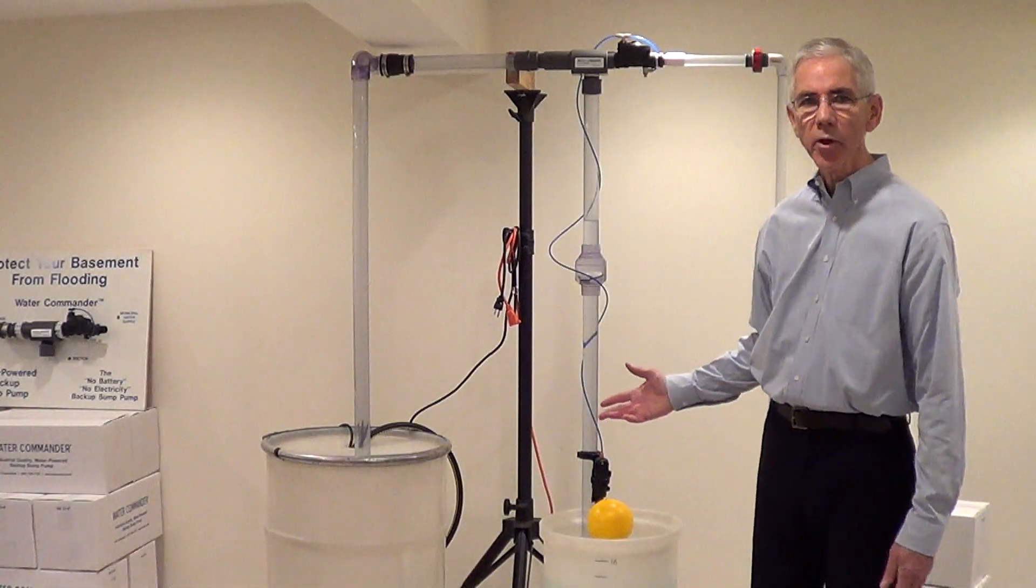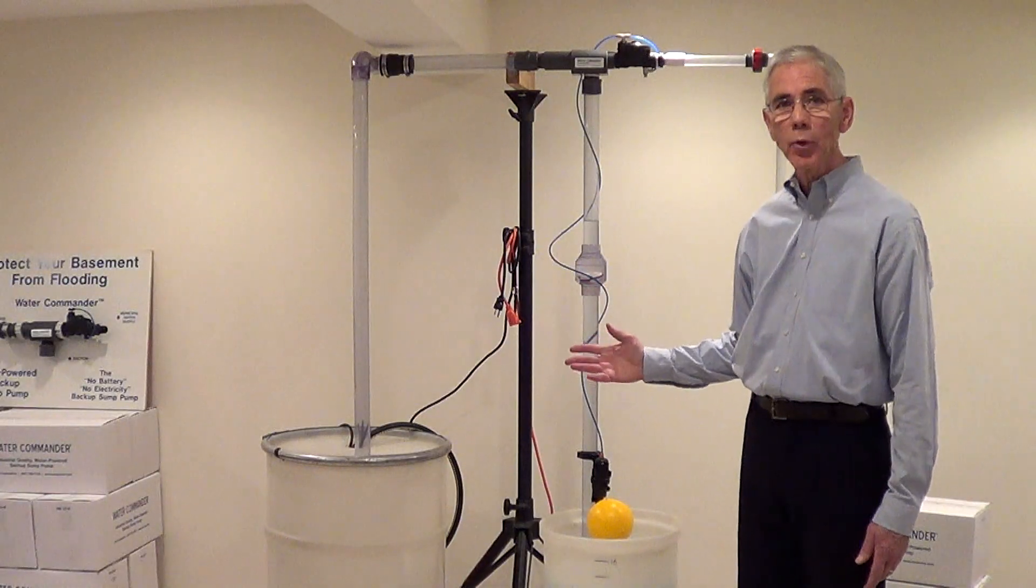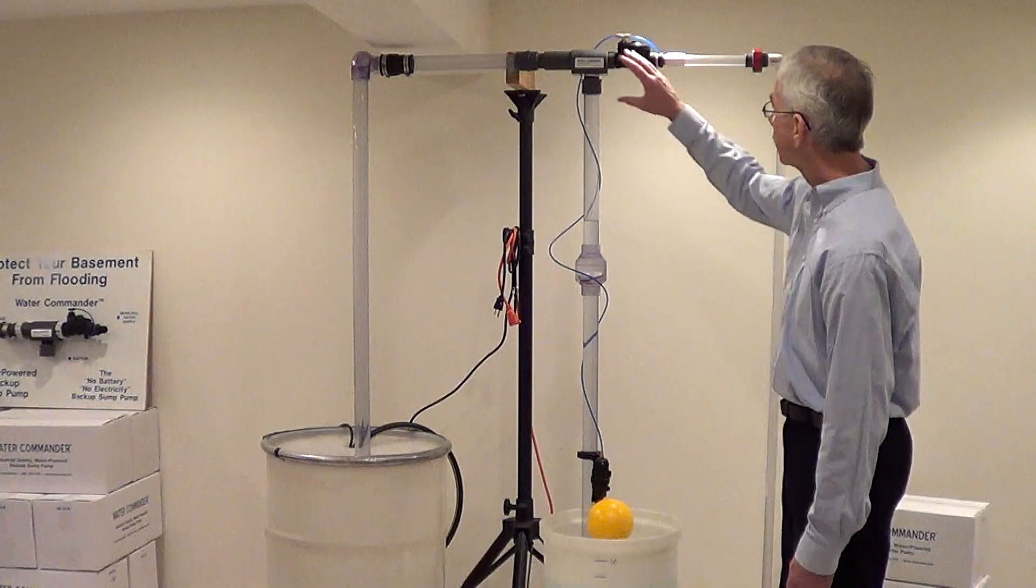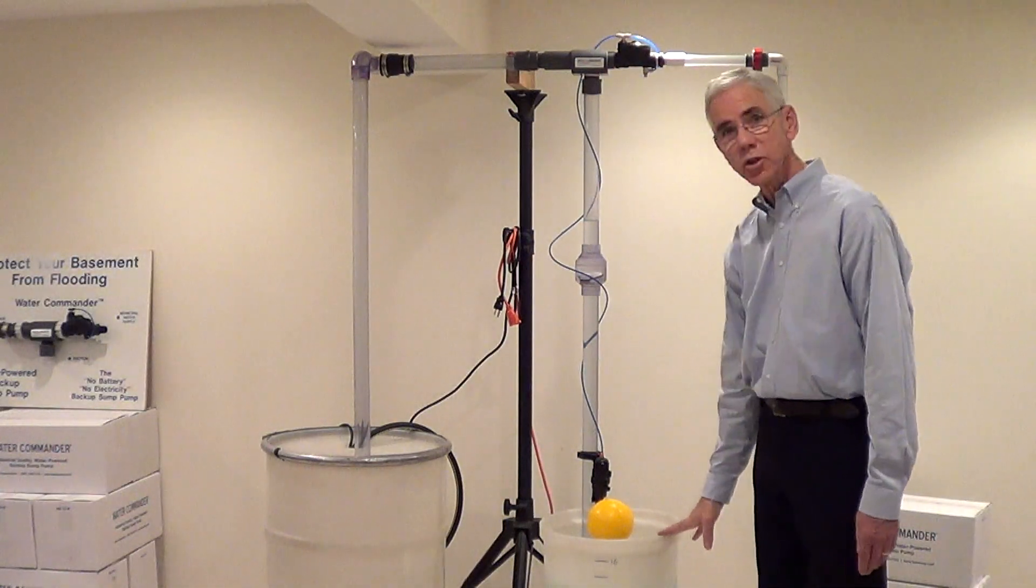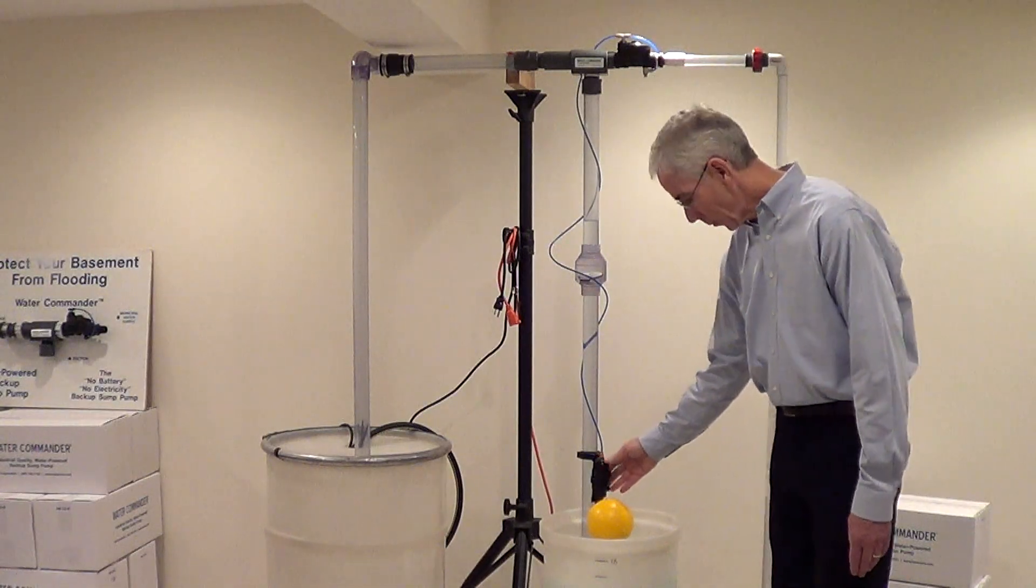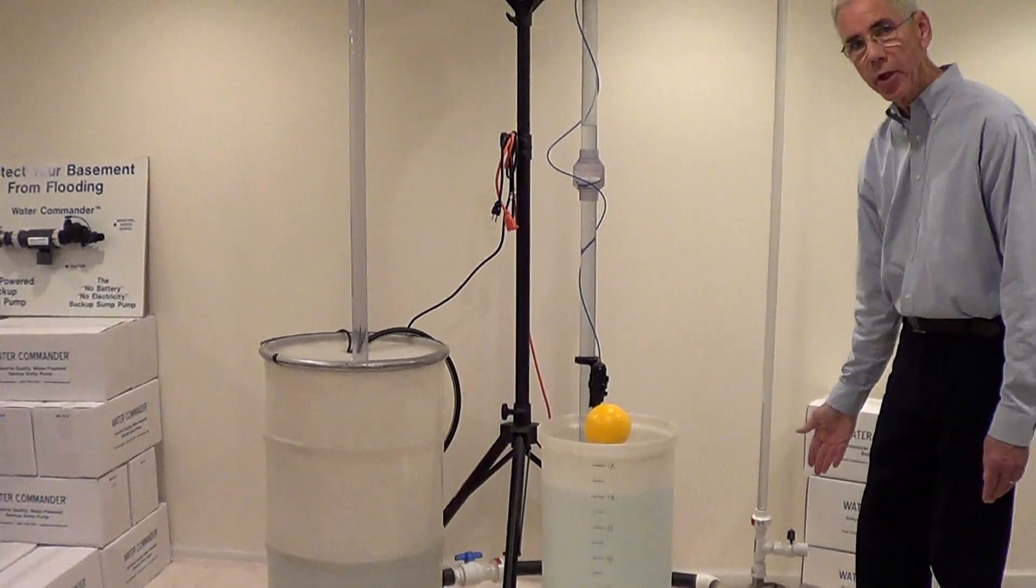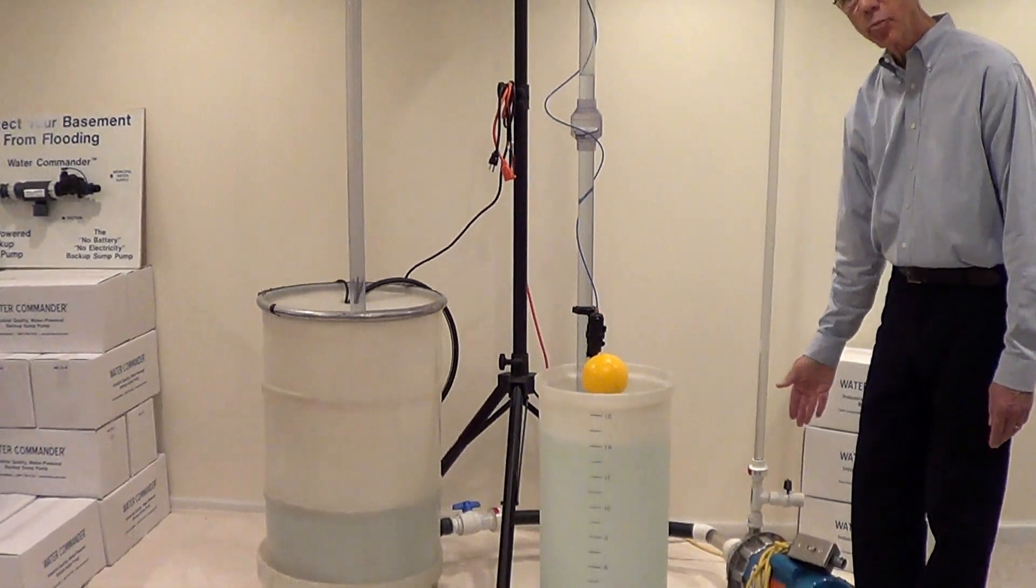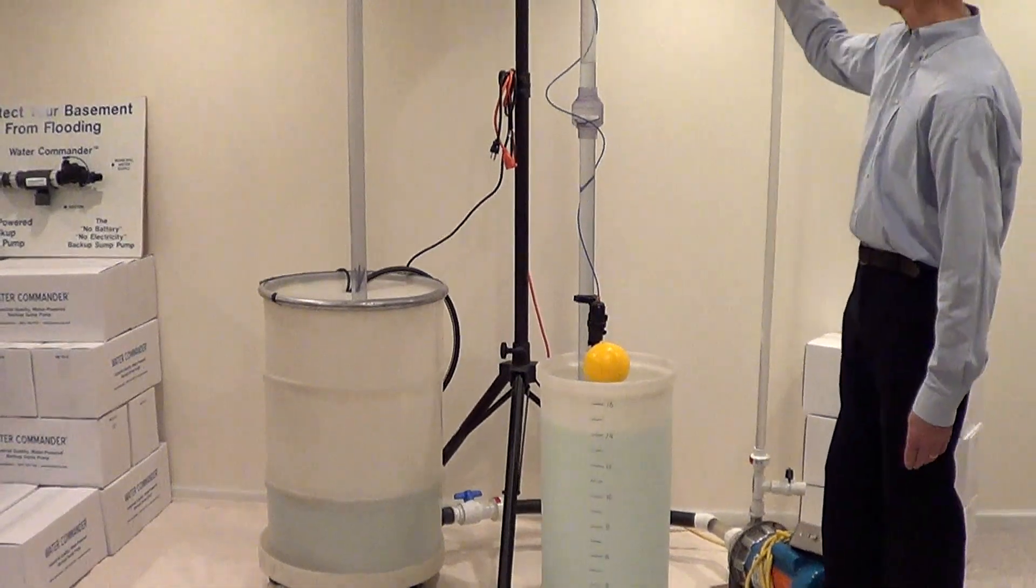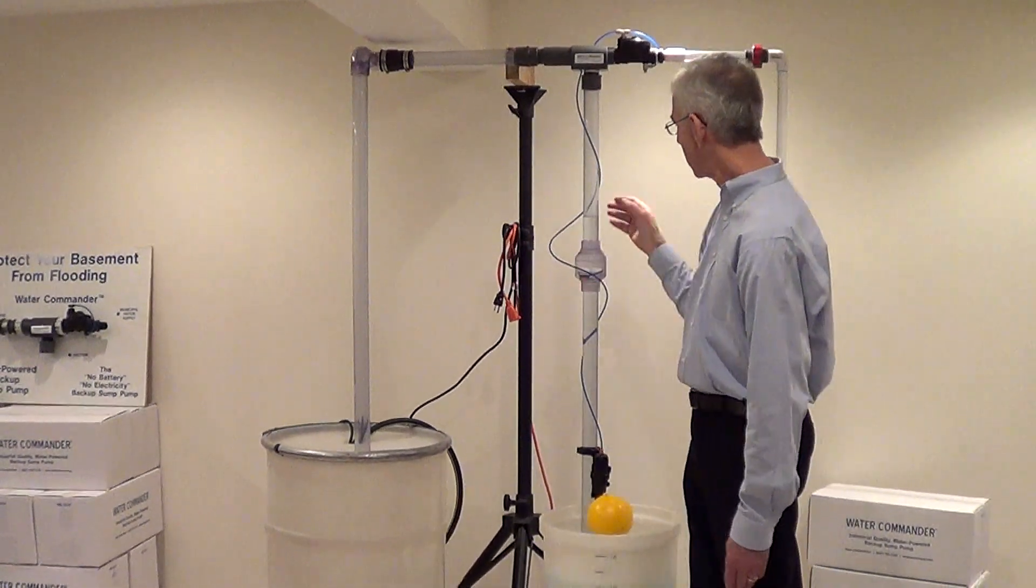Here we have our Water Commander demonstration unit. This unit is designed to show the operation of the pump in a simulated situation. It consists of our Water Commander pump mounted above our sump with a float attached to the suction pipe. We have a pressure pump here giving us over 50 pounds of pressure to simulate city water pressure coming through a three-quarter inch pipe. This is our discharge pipe. This is our suction pipe.